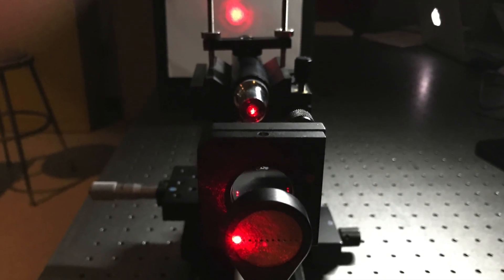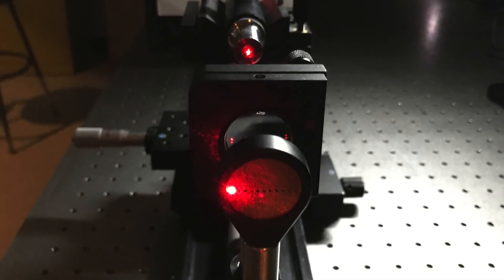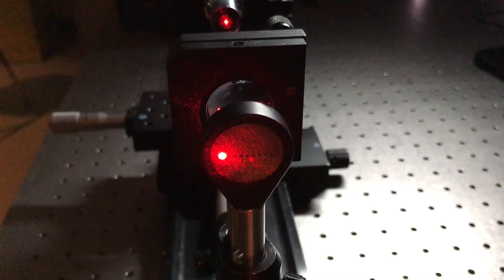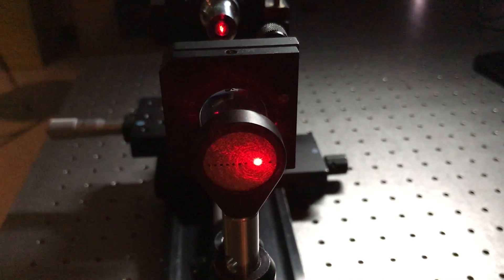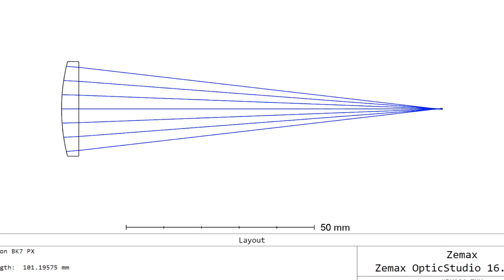In this lab, we will observe the effects of spherical aberration by measuring and plotting the transverse ray errors and the longitudinal ray errors. By doing this, we can see how changing the lens shape factors help minimize spherical aberration. We will compare our results to theoretical plots obtained by a Zemax simulation.